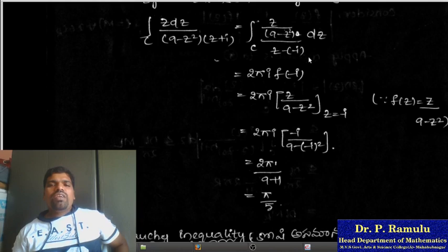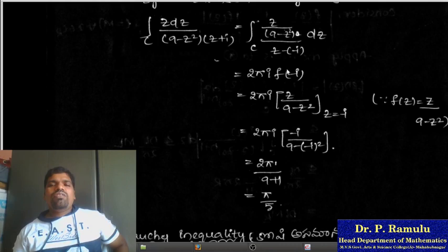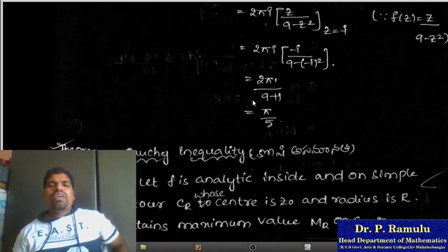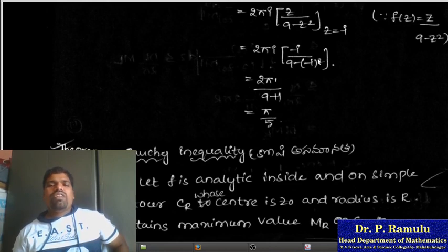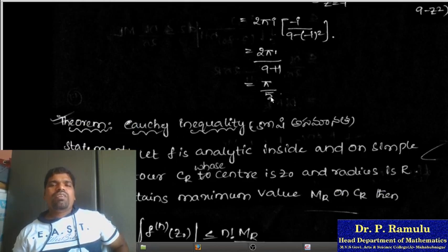By the Cauchy integral formula, we write the integrand as f(z)/(z - (-i)) dz, where z₀ = -i. Applying the Cauchy integral formula: result = 2πi × f(-i) = 2πi × [(-i)/(9 - (-i)²)] = 2πi × (-i)/(9 - (-1)) = 2πi × (-i)/10. Since i × (-i) = 1, we get 2πi × (-i)/10 = 2π/10 = π/5.